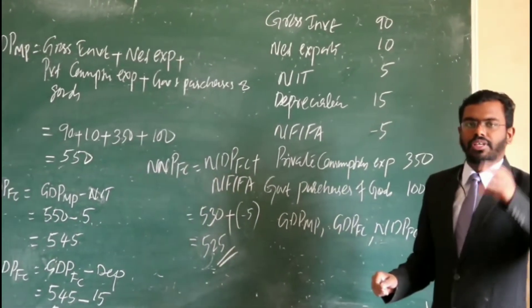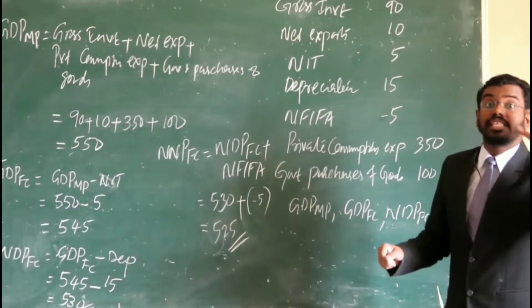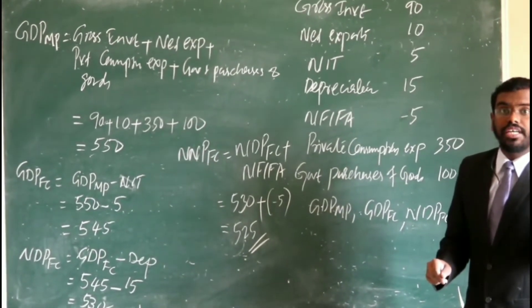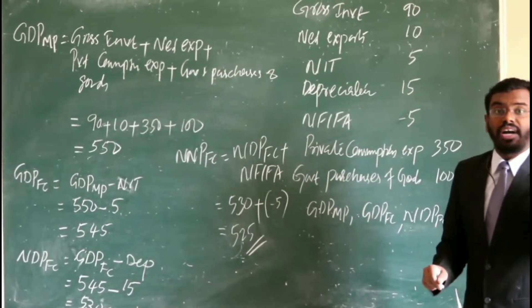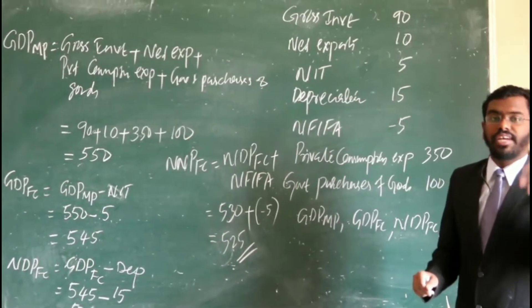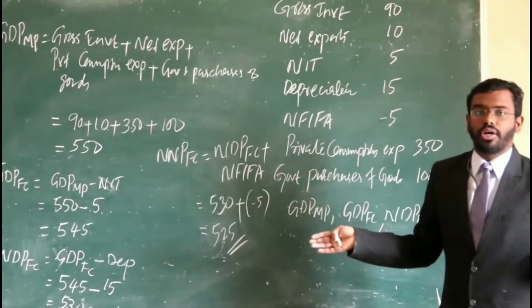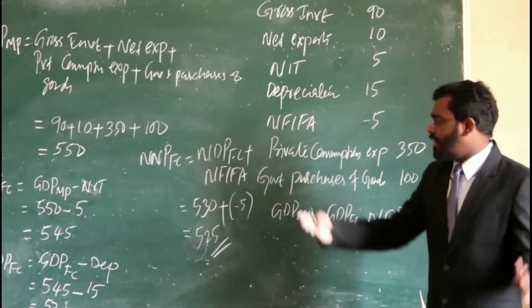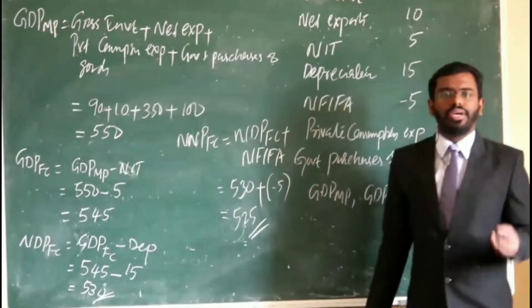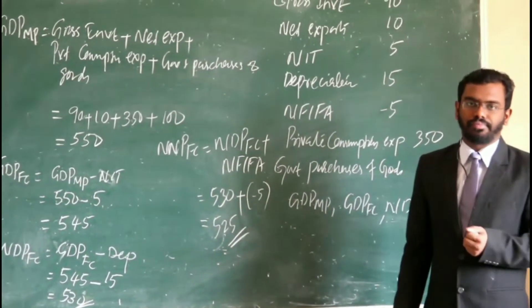First, in the expenditure method, you need to calculate GDPMP. Keep in mind: how we can calculate GDPMP — whatever the final expenditures are given in the question, just add it. From GDPMP, you can easily calculate NNPFC if you know the concept.